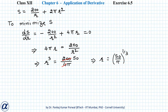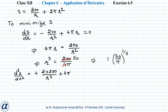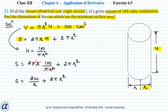To check whether we have a maximum or minimum, we find the second derivative of S with respect to r. d²S/dr² equals +2 × 200/r³ + 4π. This is a positive function of r, and for positive values of r, d²S/dr² will be positive, confirming we have a minimum at r = (50/π)^(1/3).